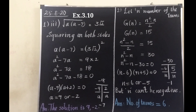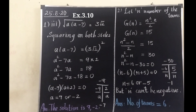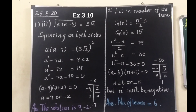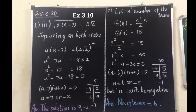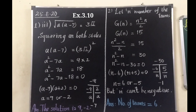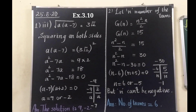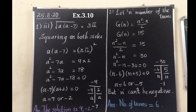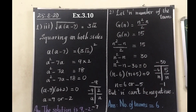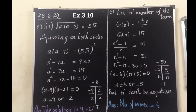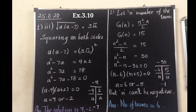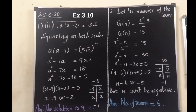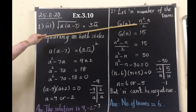Then the second sum — it is given as a statement sum. Look at the sum in your book. It says about the number of teams participating in a tournament. The number of games that must be scheduled in a league with n teams is given by g(n) equals n squared minus n, divided by 2. That is the number of games scheduled in a league with n teams.